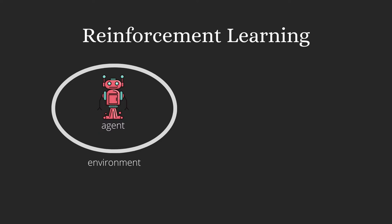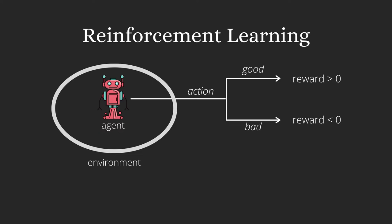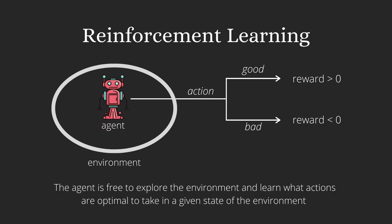Finally, we have reinforcement learning, also known as RL. Here, we have an agent in an environment. The agent looks at the state of the environment and takes an action. If the action taken was good, the agent is rewarded, and if it was bad, the agent is penalized. So it is basically a reward-based learning where the agent is free to explore the environment and learn what actions to take in any given state of the environment.